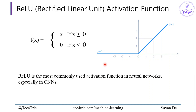Next we have ReLU — the Rectified Linear Unit activation function. ReLU is the most commonly used activation function in neural networks, especially in CNNs. If x is greater than or equal to 0, it produces x; if x is less than 0, it produces 0.